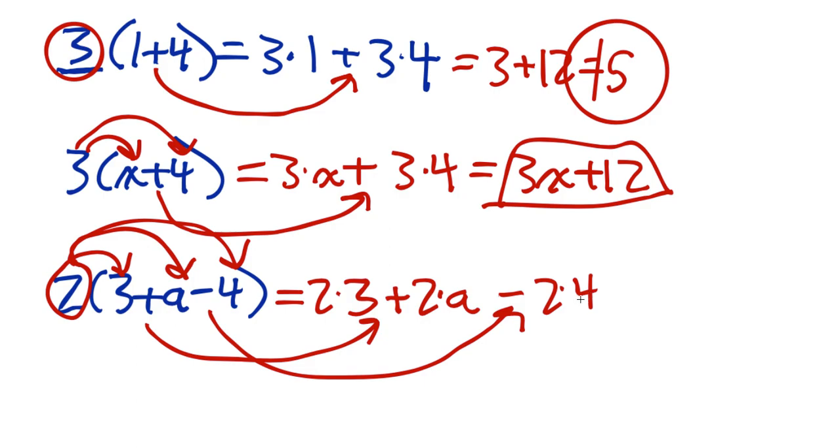Now, if I actually multiply everything, that's going to be 6 plus 2a minus 8. Again, after I distribute, I want to collect like terms. In the other cases, I did collect like terms. Like in this case, 3 plus 12 equals 15. The other example, 3 times quantity x plus 4, they weren't like terms. So that one's already done.